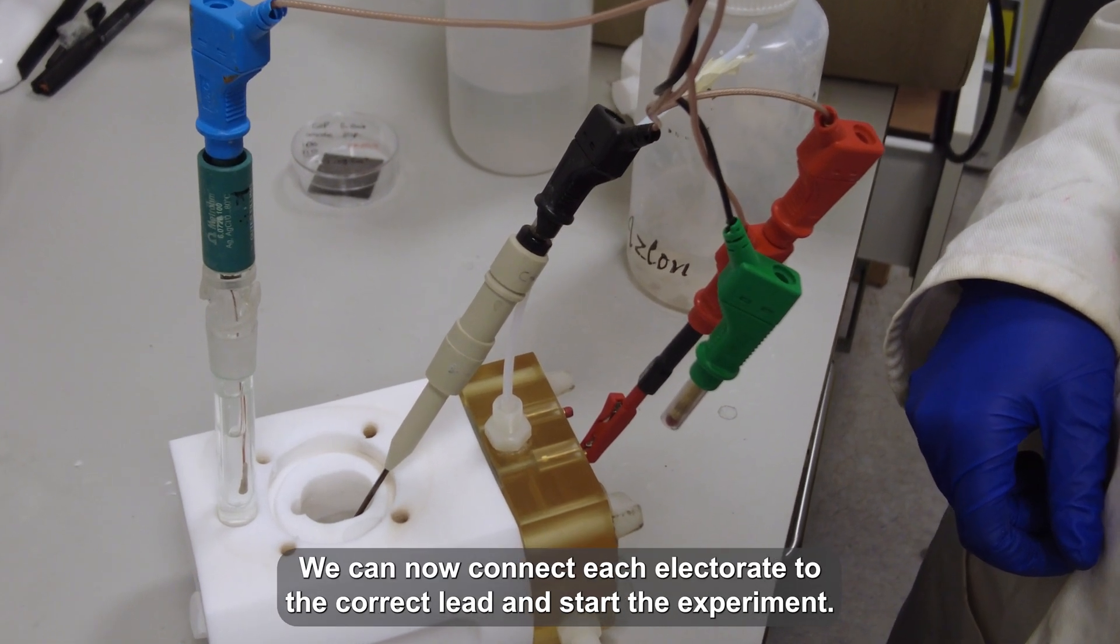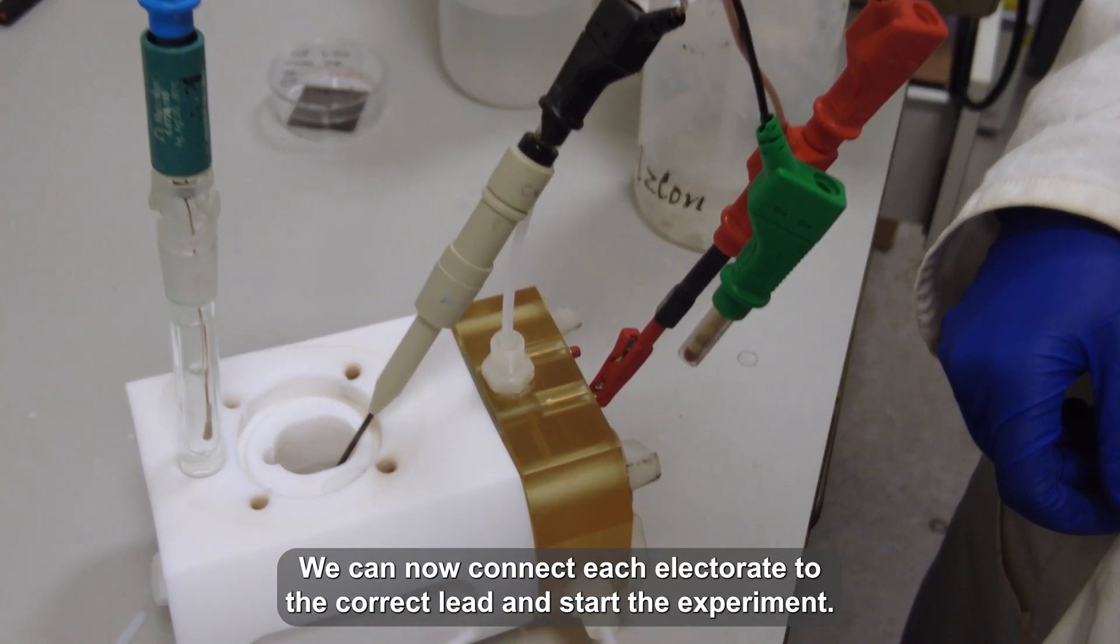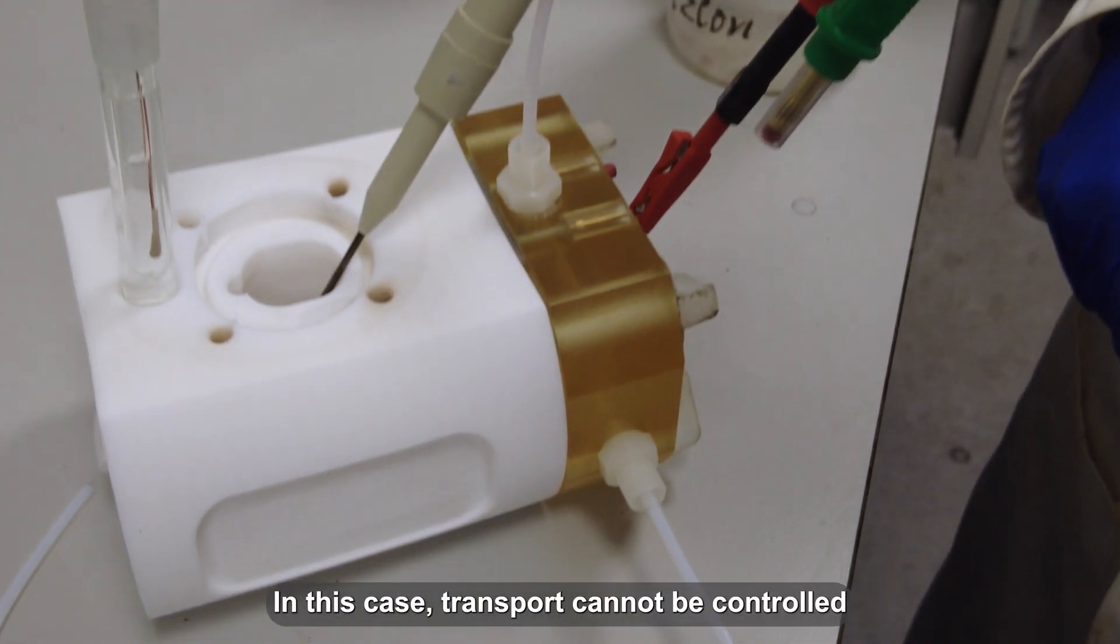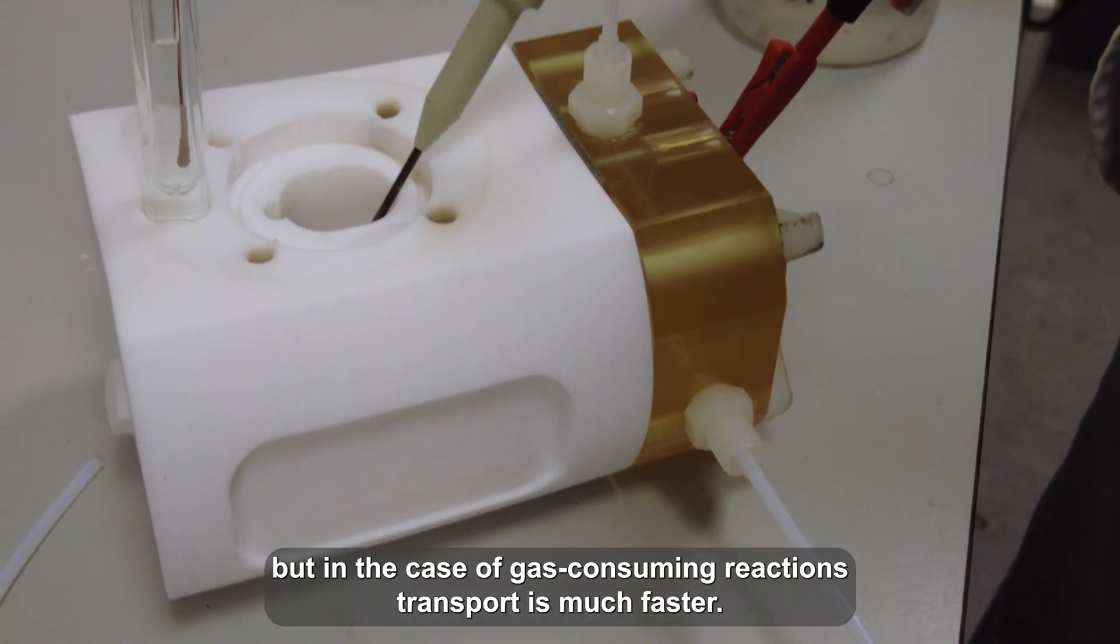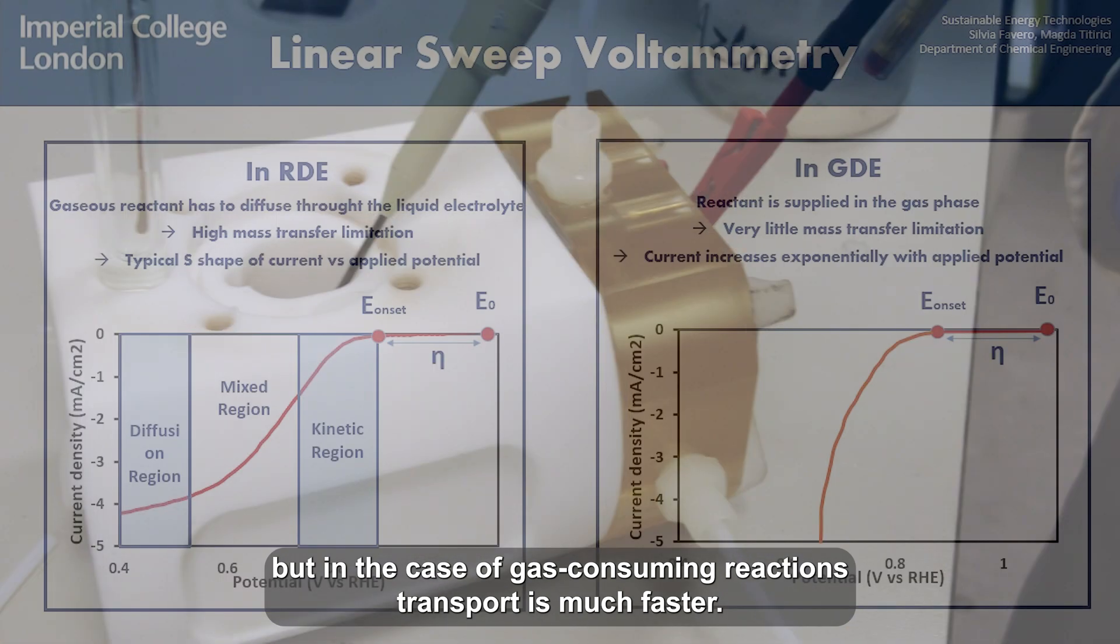We can now connect each electrode to the correct lead and start the experiment. In this case, transport cannot be controlled by rotating the working electrode, but in the case of gas-consuming reactions, transport is much faster.